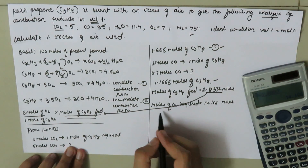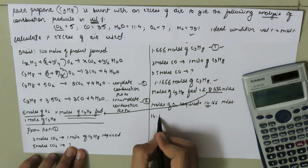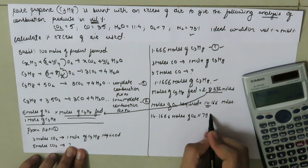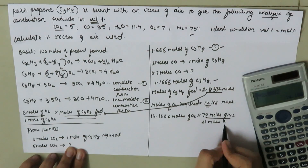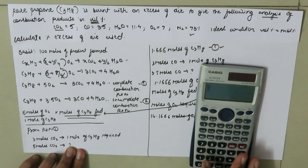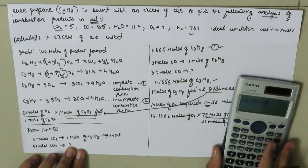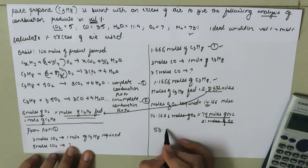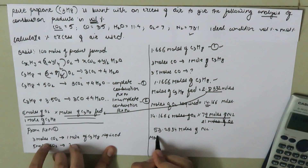To find the theoretical air, we perform a dimensional balance to calculate the moles of nitrogen required. Using the air composition: 14.1666 moles O2 × (79 moles N2 / 21 moles O2) = 53.2934 moles of nitrogen theoretically required.